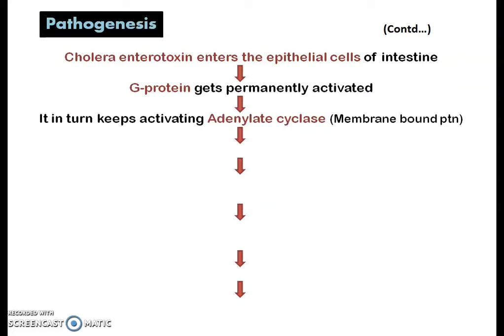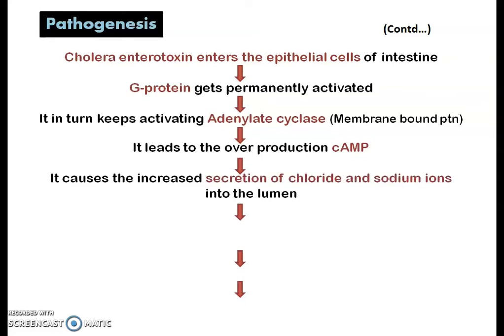The permanently activated G protein in turn keeps activating adenylate cyclase, which is a membrane-bound protein. This leads to the overproduction of cyclic AMP, which is an intracellular secondary messenger. The overproduction of cyclic AMP causes increased secretion of chloride and sodium ions into the lumen of the intestine.